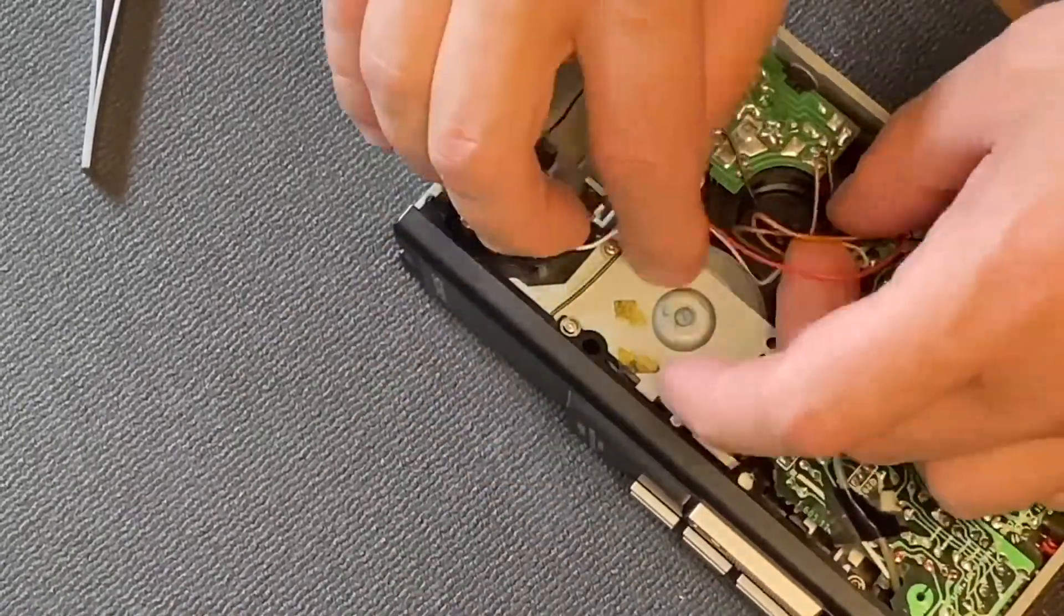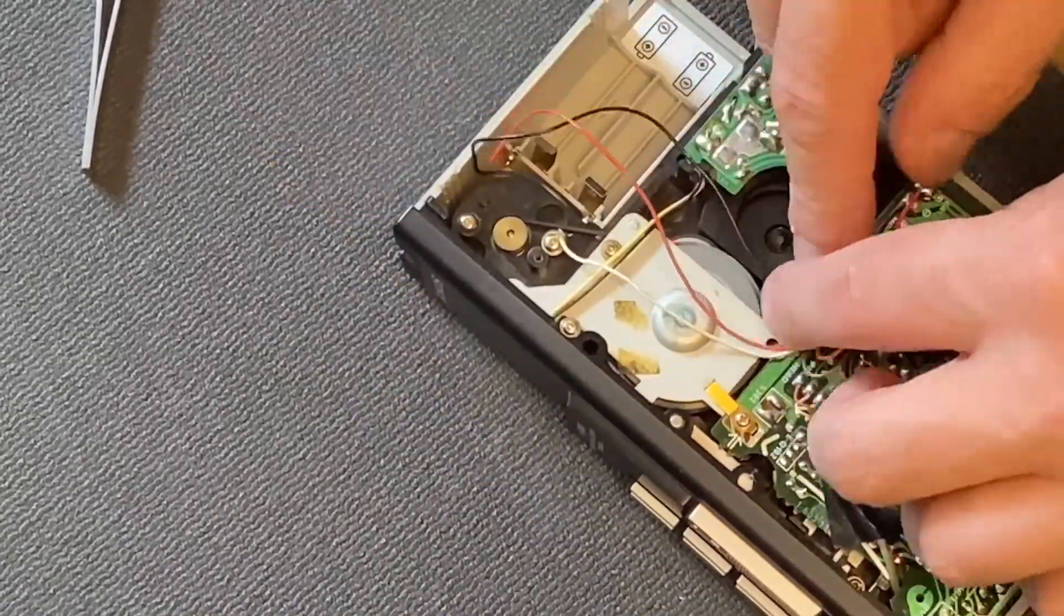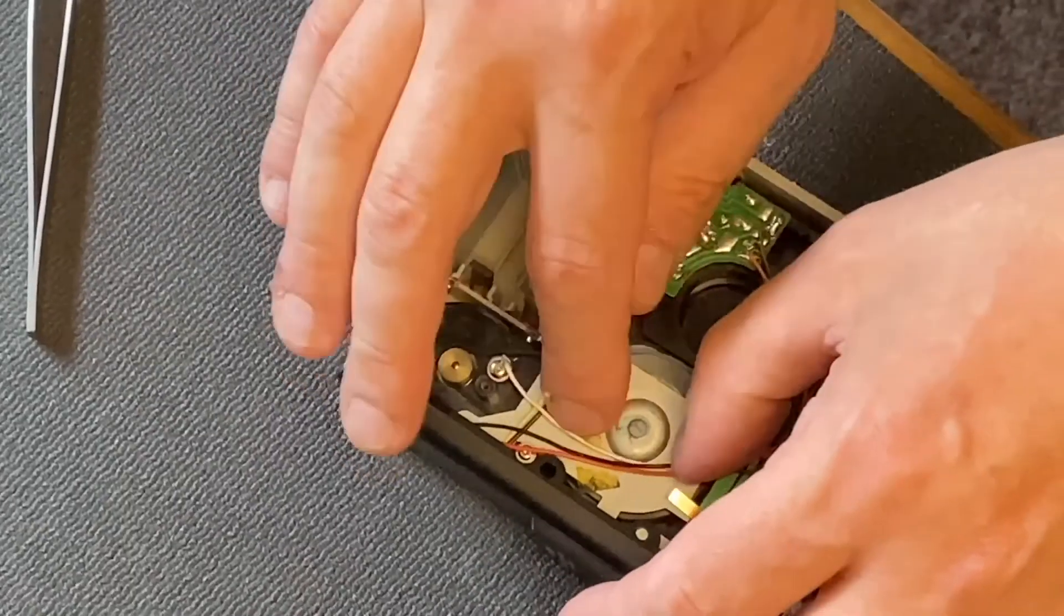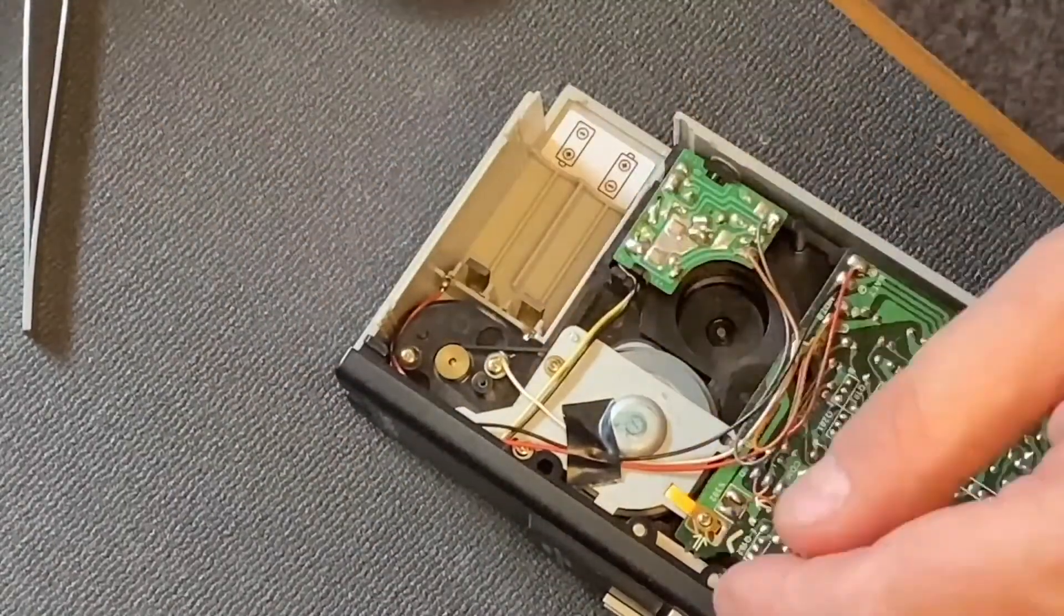Step 14: Reattach the wires with electrical tape. Now we'll secure the cables with tape again. Use the new pieces of electrical tape we prepared earlier to hold the wires in place on the circuit board.